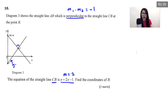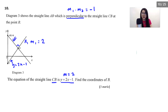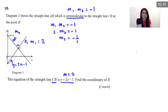The equation is y equals 2x minus 1, so m₁ equals 2. With m₁ we can find the perpendicular gradient — the gradient of AB which I label m₂. Using m₁ × m₂ equals negative 1: 2 times m₂ equals negative 1, therefore m₂ equals negative 1 over 2. We need this gradient to find the equation of straight line AB.